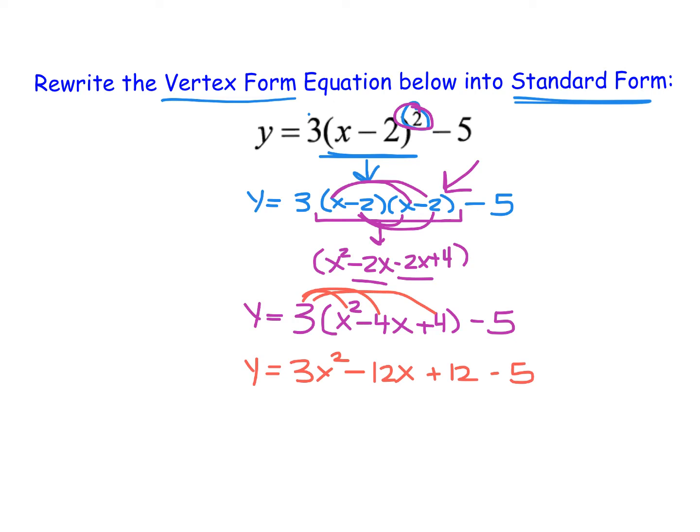And now I see I am very, very close to standard form. I really just have one more step and if I combined the like terms that I see, which are 12 and negative 5,